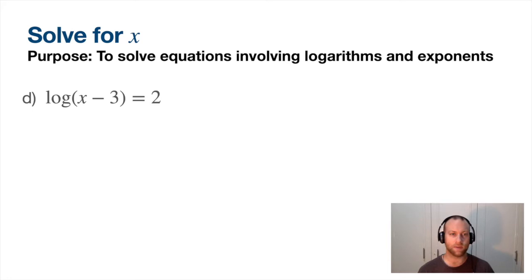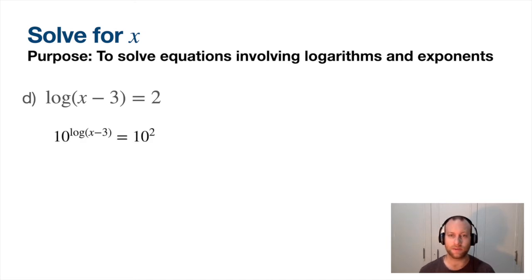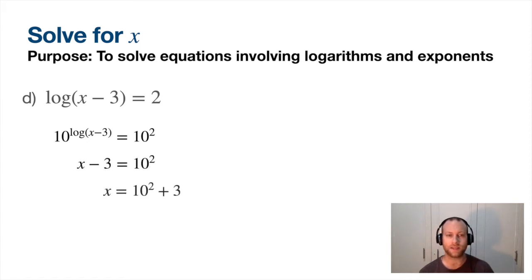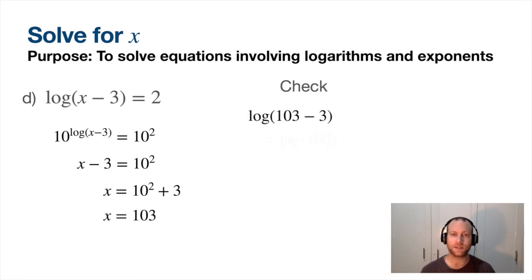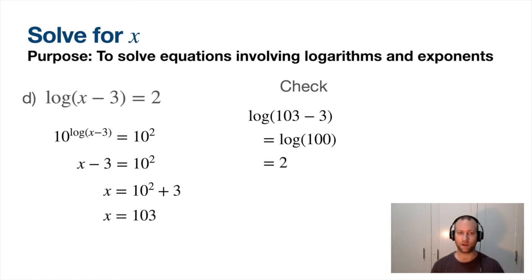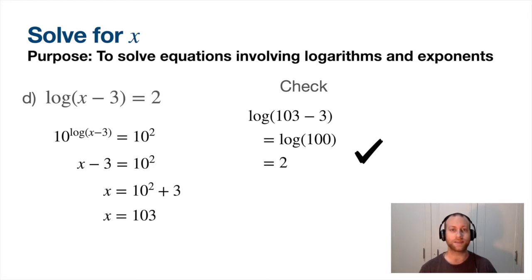Next — we've got x inside of a log. In order to get rid of the log, since it's log base 10, I put both sides as 10 to the power of. 10 to the power of log cancels out, so I get x minus 3, and x is 10 squared plus 3, which is 103. You can double-check by putting this back inside of the log to see if it works — and indeed it does. It's good to double-check because there will be cases where an answer doesn't make sense.